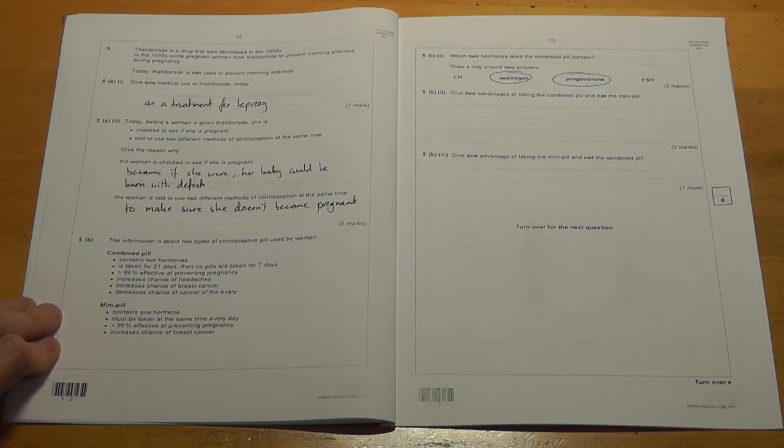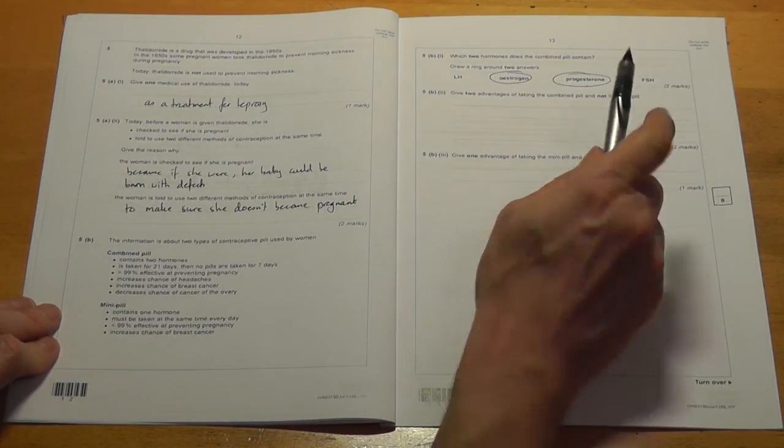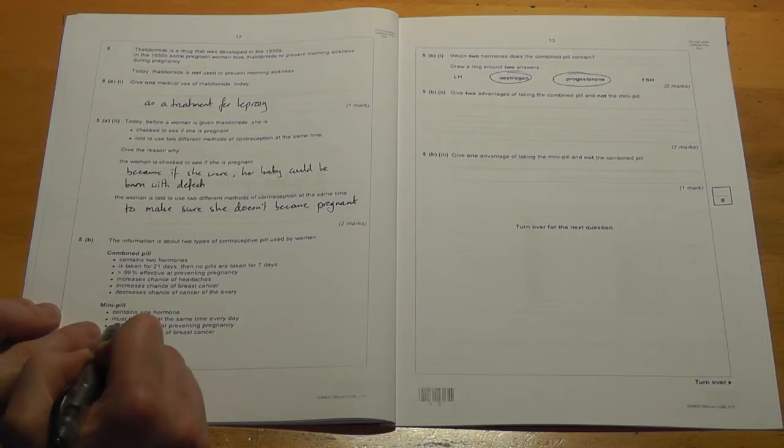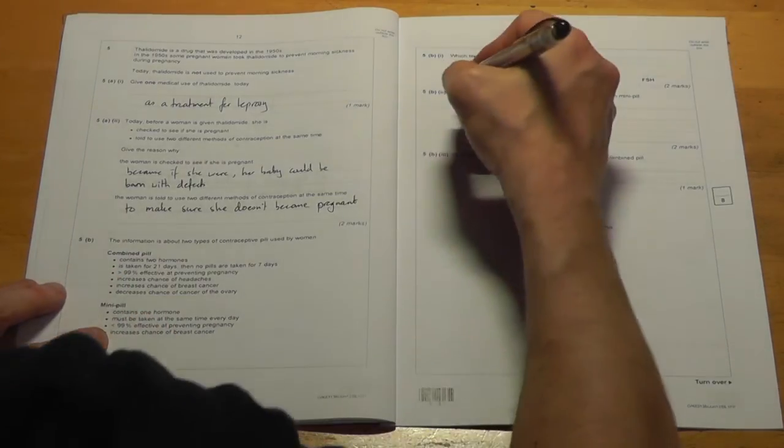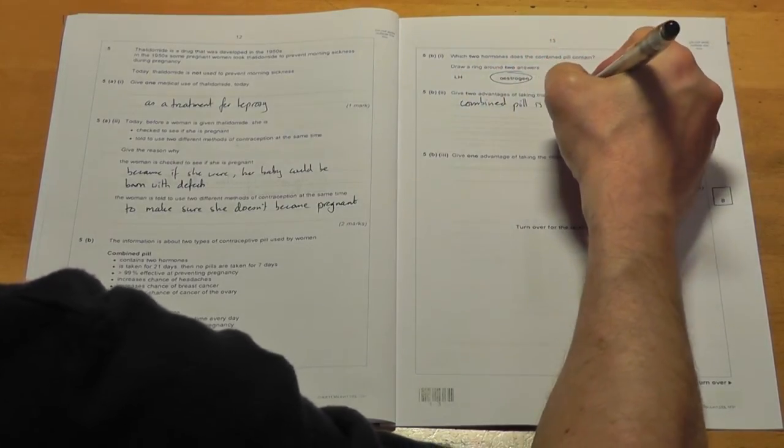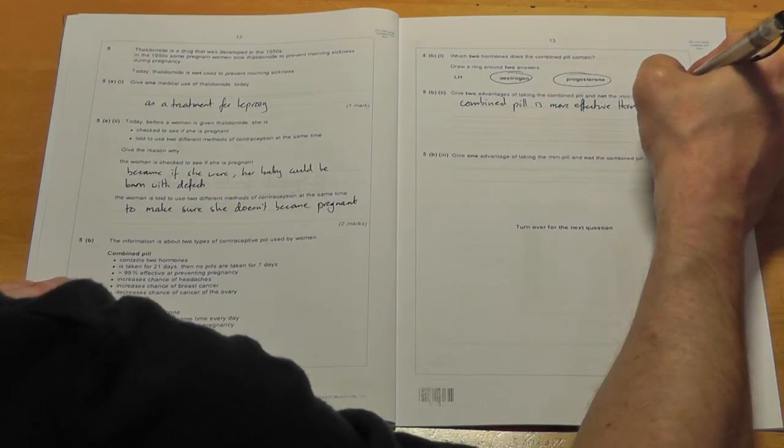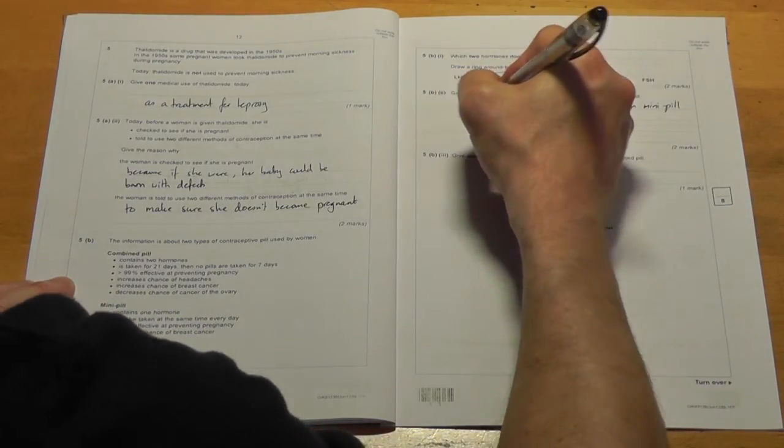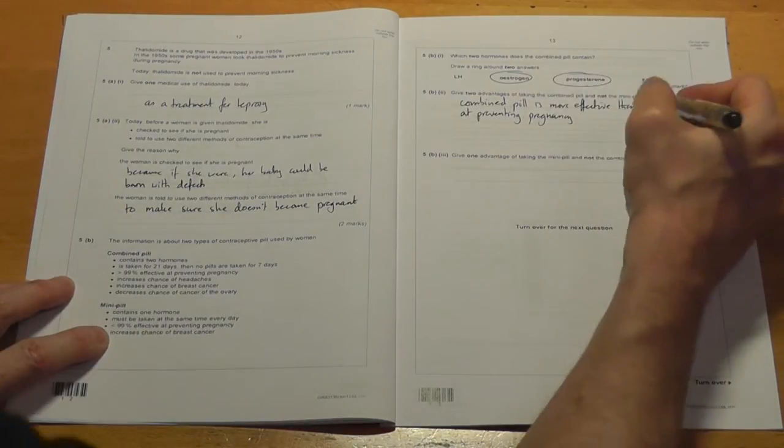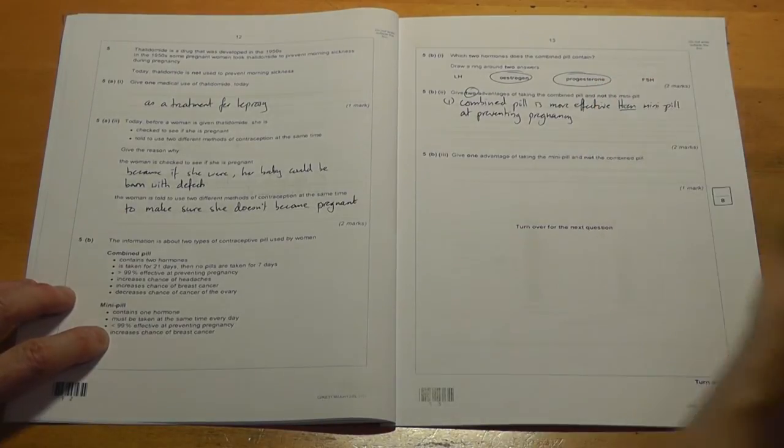Give two advantages of taking the combined pill and not the mini-pill. So you've got to choose something that's good about the combined pill, but not about the mini-pill. Okay, well looking down here, this one is the one that springs time to me. It's more than 99% effective, but the mini-pill is less than 99% effective. So I'm going to put combined pill is more effective than mini-pill at preventing pregnancy. When you're asked to compare one thing with another, always try and get the word than in. So that's my first reason.